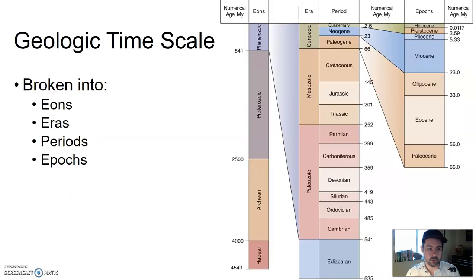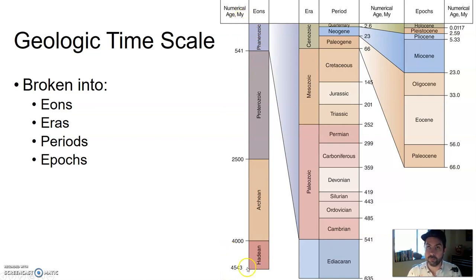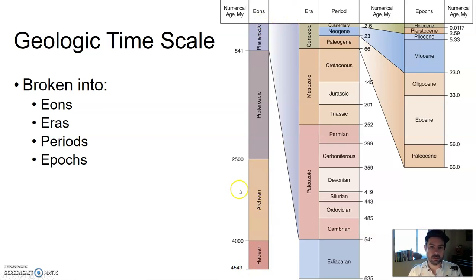Alright, so let's talk about geologic age. We have something called the geologic timescale. It breaks all of Earth's history up into different chunks, starting 4,543 million years ago. All of Earth's time is broken up into eons, eras, periods, and epochs.